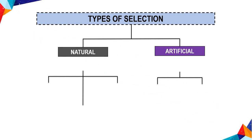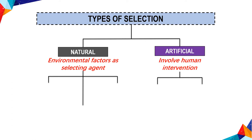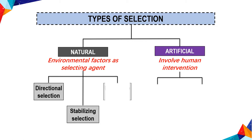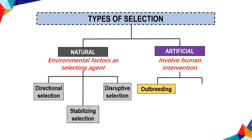Types of selection: natural and artificial. Natural selection uses environmental factors as the selecting agent. Artificial selection involves human intervention. There are three types of natural selection: directional selection, stabilizing selection, and disruptive selection. And two types of artificial selection: out-breeding and in-breeding.